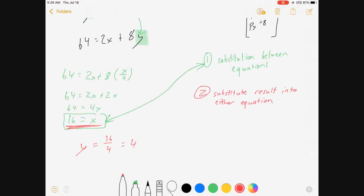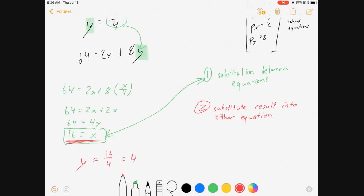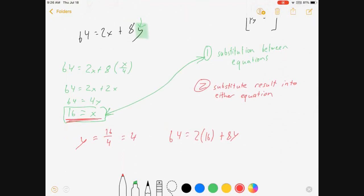All right, would I have gotten the same example if I'd substituted it into the other equation? 64 equals 2 times x, so 16, plus 8y. Is that going to give me the same thing?